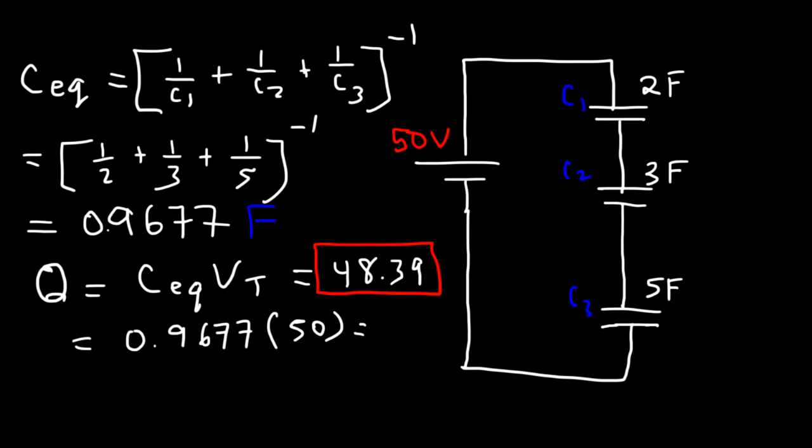So now, let's find V1. V1 is going to be Q1 over C1. So take the charge and divide it by the capacitance. Now, if you have microfarads, make sure to add the 10 to the minus 6 when dealing with your calculations. In this video, I just got to divide it by 2 since it's in farads. So 48.39 divided by 2 is about 24.2 if we round it to the nearest tenth. So that's the voltage across C1.